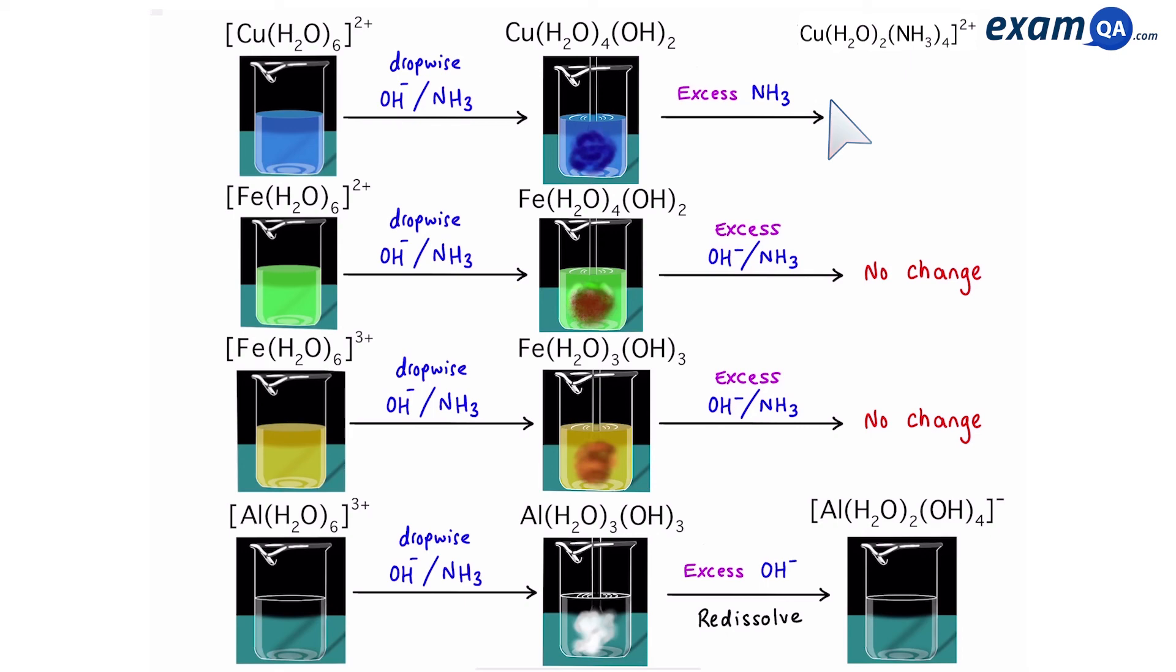So what does that mean? It means this blue precipitate will re-dissolve, and this time it's going to form a deep blue solution. So for copper, we went from pale blue solution, to blue precipitate, to deep blue solution.